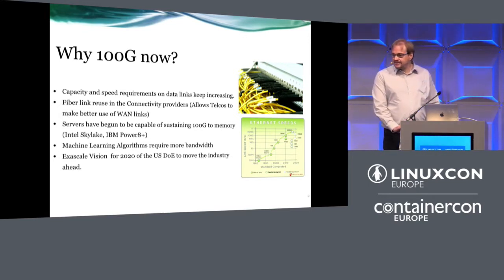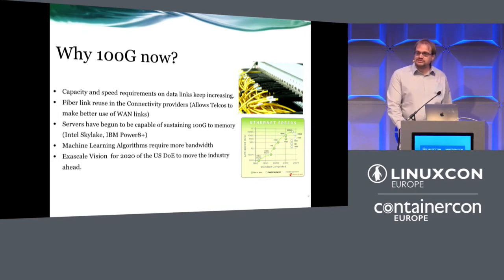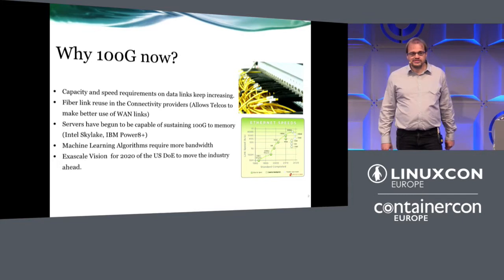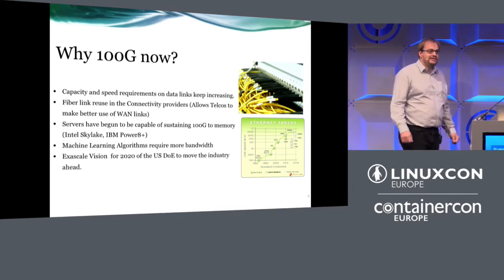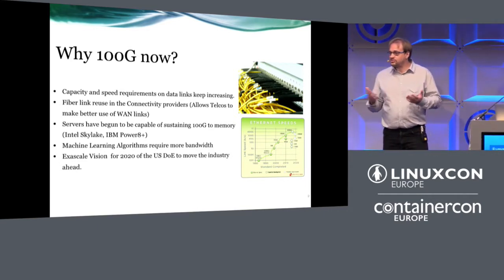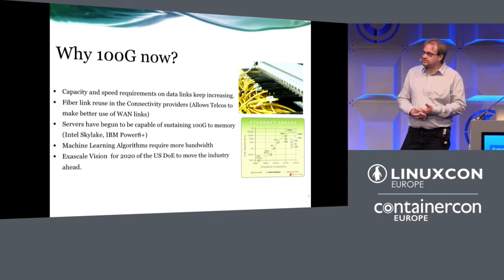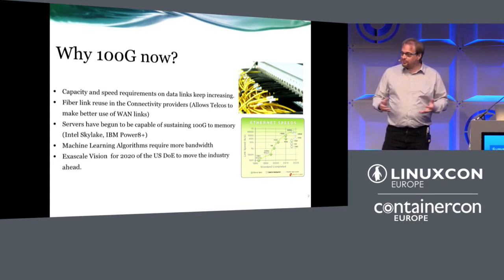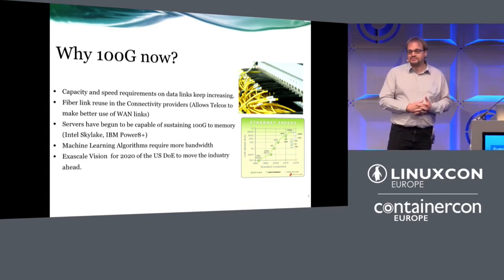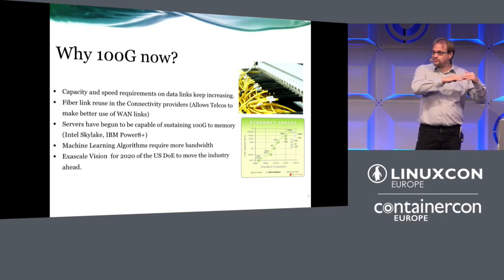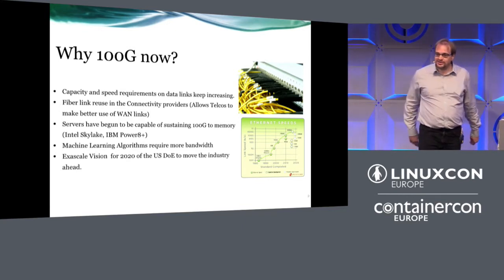100 gig is now possible because modern processors — the Intel Broadwell and Skylake — have reached the point where they can actually sustain 100 gig data reception to memory. Earlier processors, even Broadwell sometimes, struggle with these speeds. If you have a memory subsystem that can't take data in from the network, you probably shouldn't be using this. But we're getting to that point now, where network speed follows the saturation speed of the memory subsystem.